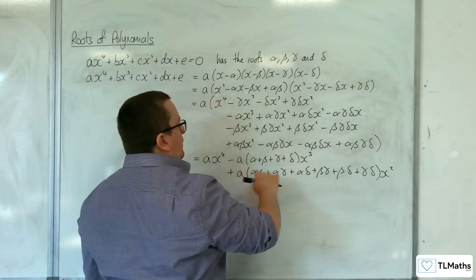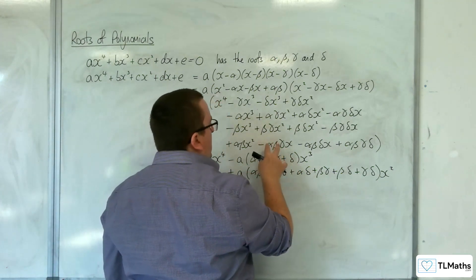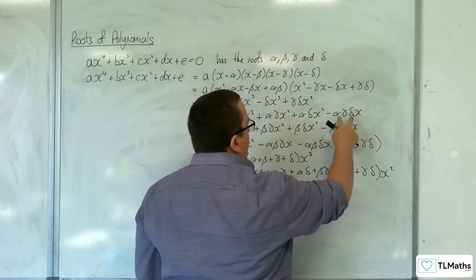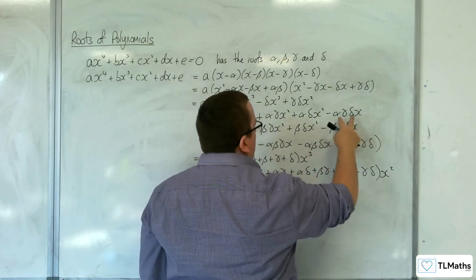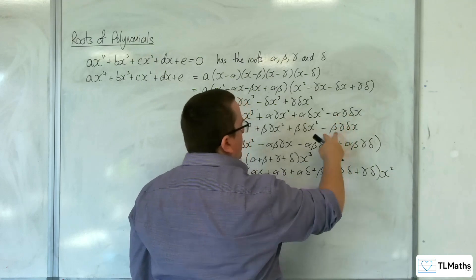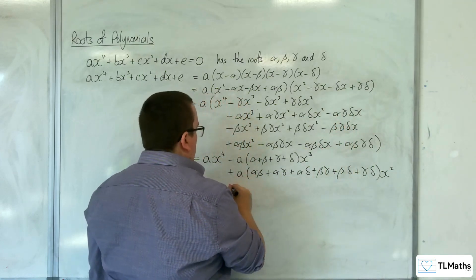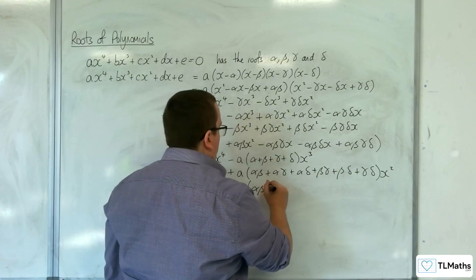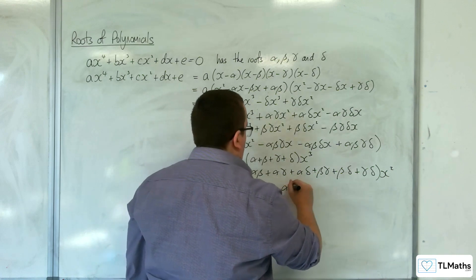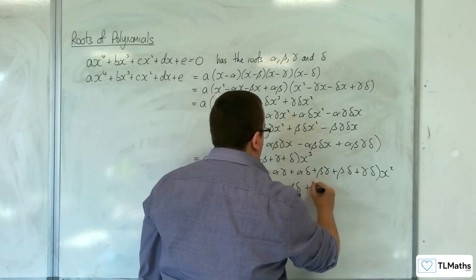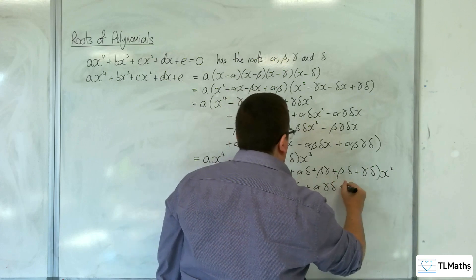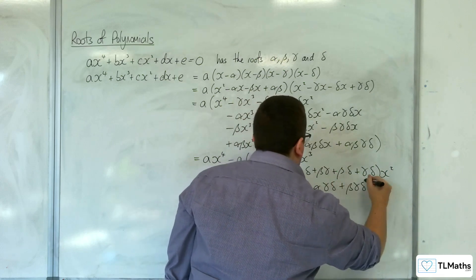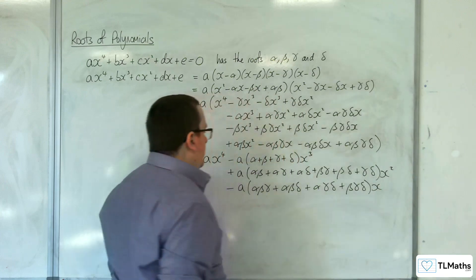For the x terms, we have all possible triple products, and they are all negative: −a(αβγ + αβδ + αγδ + βγδ)x.